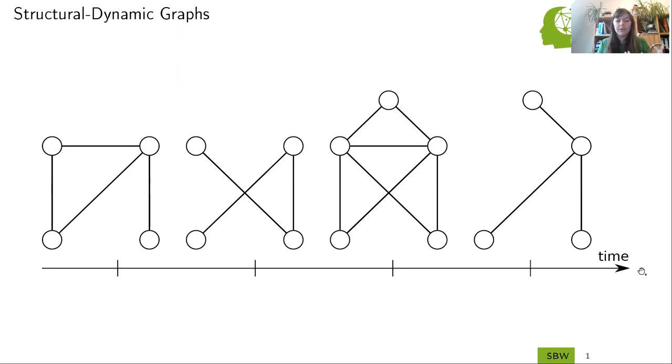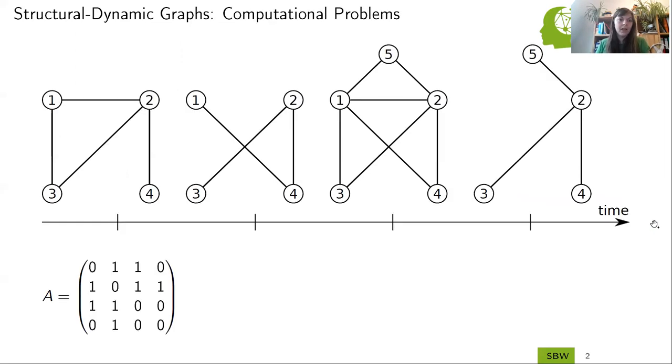So when it comes to learning on such a structural dynamic graph, the problem is twofold. A very common representation of a graph is an adjacency matrix. Its dimensions are the same as the number of nodes, so in this case four times four, and it includes zeros and ones, whenever a pair of nodes is connected by an edge, and zero if not. This adjacency matrix can change over time when new edges occur or edges are deleted. There are already models that can handle this problem.